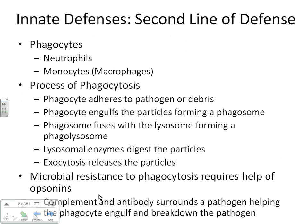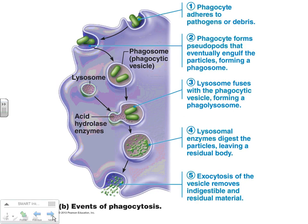The second line of defense involves two major cells that both perform phagocytosis: neutrophils and macrophages, which come from monocytes. Phagocytosis is the process where the neutrophil or macrophage sees an incoming pathogen, reaches out, grabs it, pulls it into the cell forming a phagosome. The phagosome then fuses with the lysosome, releasing digestive enzymes that break down whatever's inside.